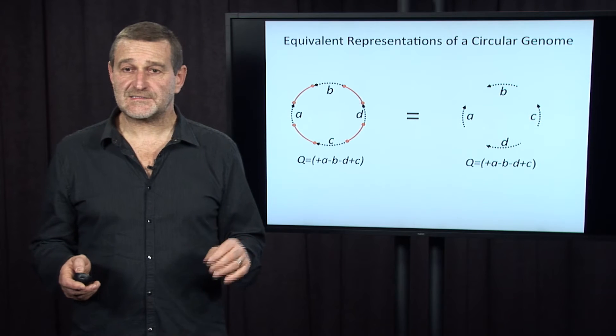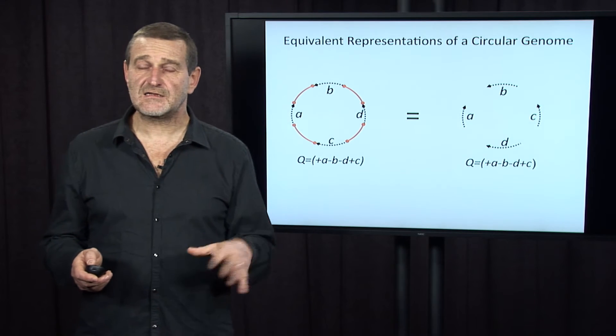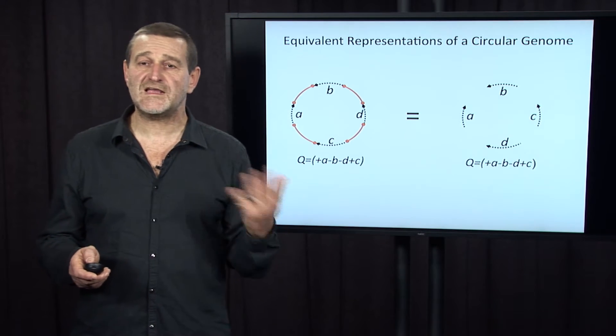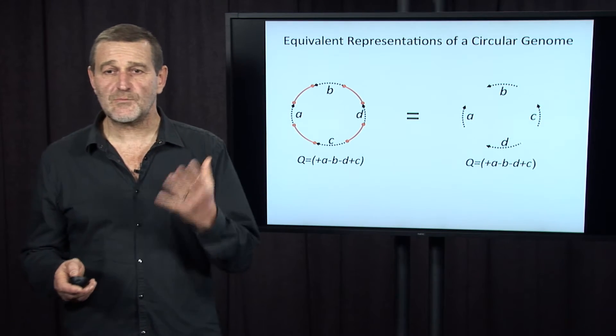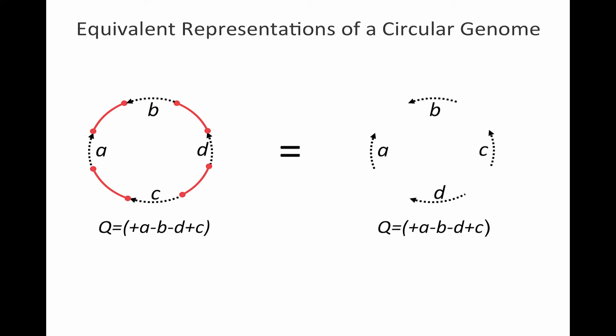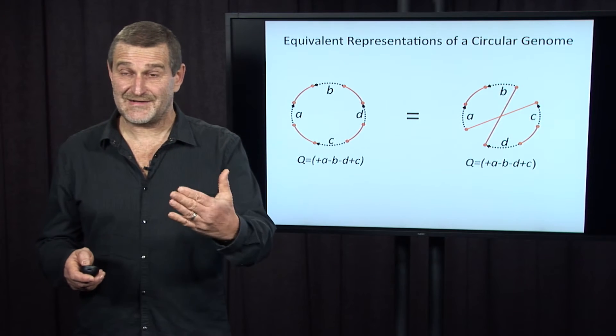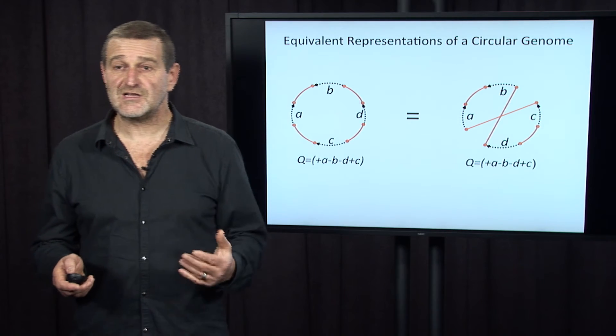Now, let's notice that for every genome there are many different ways to visualize it. For example, this is genome Q arranged in natural order along a cycle. But we can change the arrangement of black edges of Q. After plus A we go to minus B, after minus B we go to minus D, after minus D we go to plus C, and finally back to plus A. This is the same genome and the same graph — in fact, the same cycle — just visualized differently.